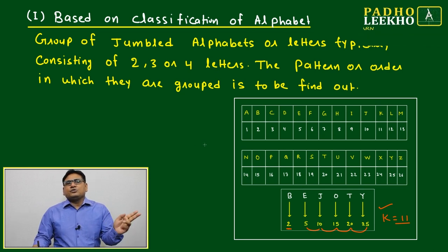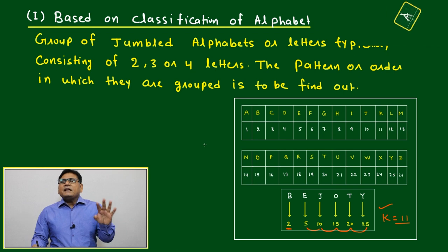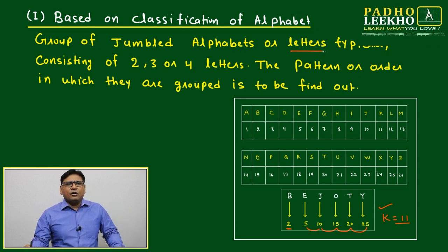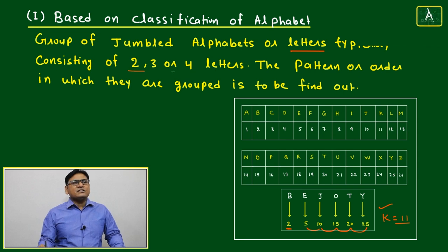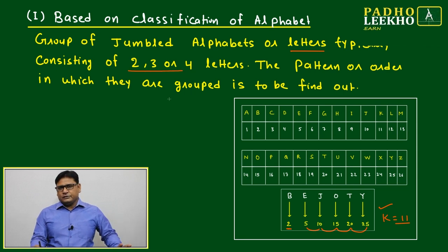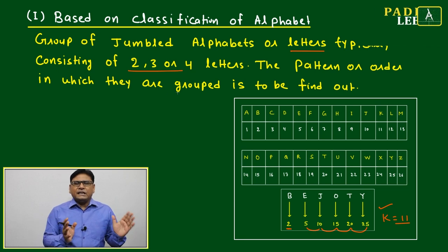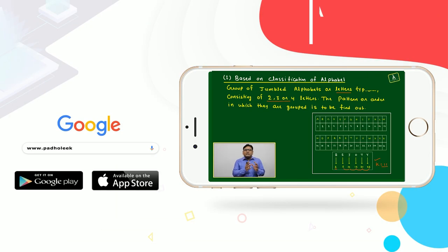Group of jumbled alphabets or letters typically consisting of two, three, or four letters. They will not be very complicated - like two letters or three letters or two alphabets or three alphabets are jumbled based on certain condition or based on certain pattern. All are following a certain pattern, but one will not follow.